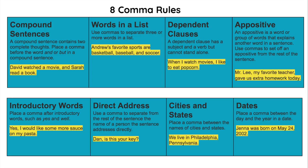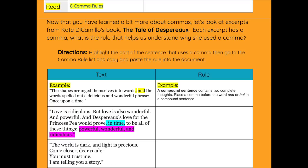Having this document linked for easy access allows all types of learners to receive the level of support they need to succeed with the lesson or go beyond. The apply part of the lesson design asks students to examine text from their current class read-aloud, look for commas, highlight them, then check the eight rules to find out which ones apply, and copy and paste the rules into the chart.